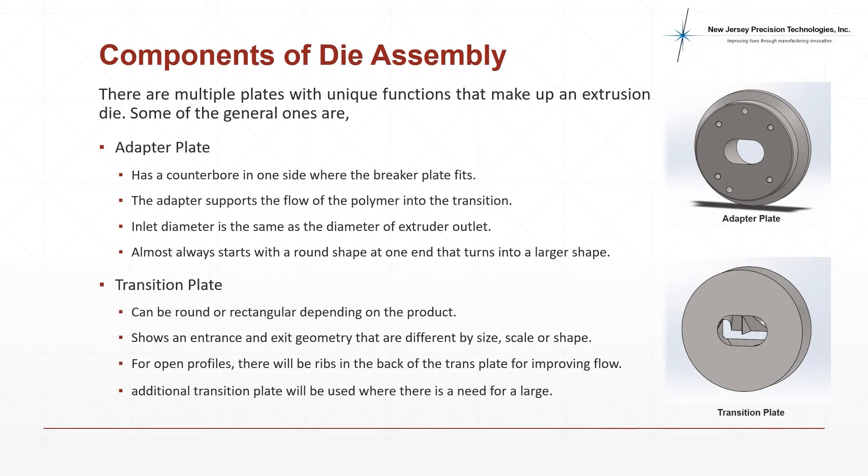The adapter plate is the first set of extrusion die plates, always being a round shape. It is found near the extruder outlet. This plate has the counter bore on one side to allow space for a breaker plate to sit in. The adapter supports the flow of the polymer into the transition plates.